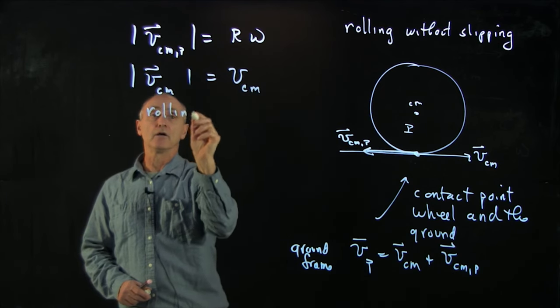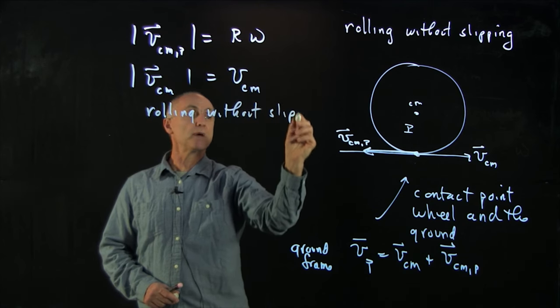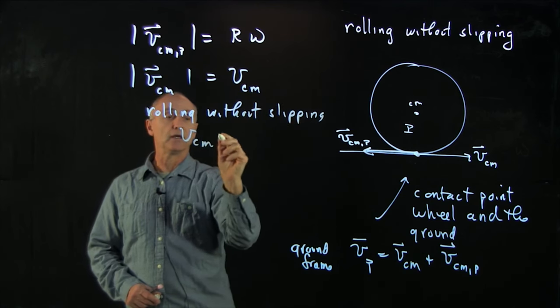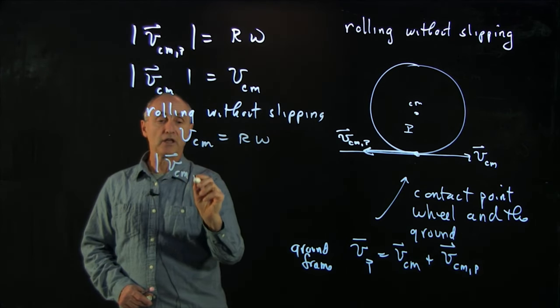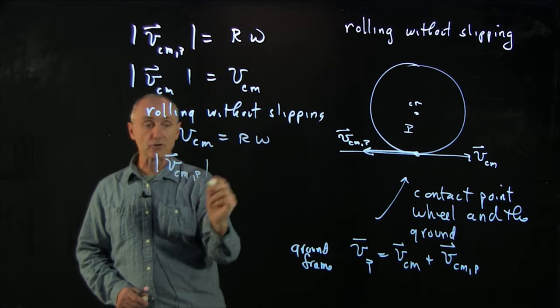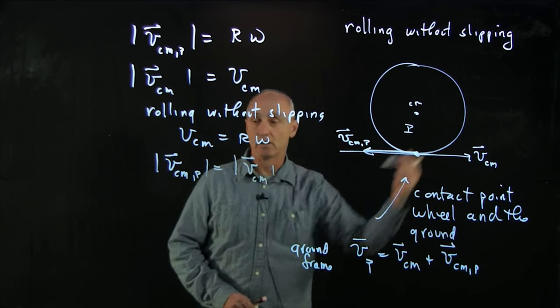Now, the rolling without slipping condition was that these two magnitudes were equal. vcm equals r omega, or the velocity of the point on the rim in the center of mass frame is equal to the center of mass velocity of the wheel.